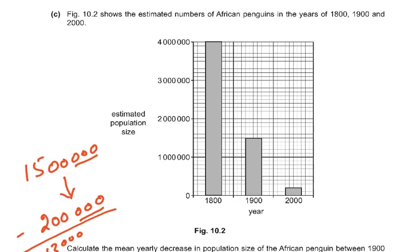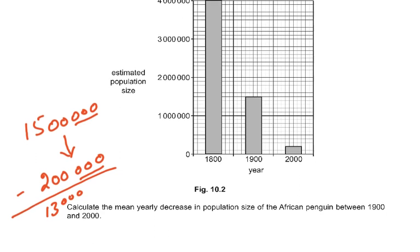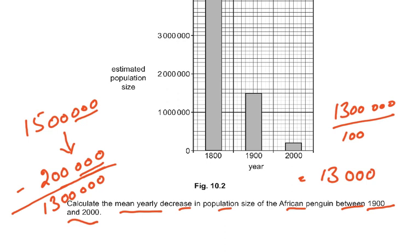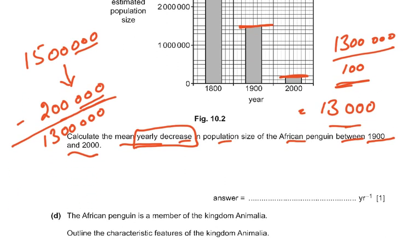Figure 10.2 shows the estimated number of African penguins in 1800, 1900 and 2000. The question asks to calculate the mean yearly decrease in population size between 1900 and 2000. The value in 1900 was 1,500,000 and in 2000 it was 200,000. The decrease is 1,300,000 over 100 years, so 1,300,000 ÷ 100 = 13,000 per year.